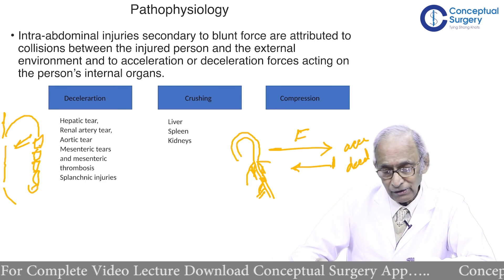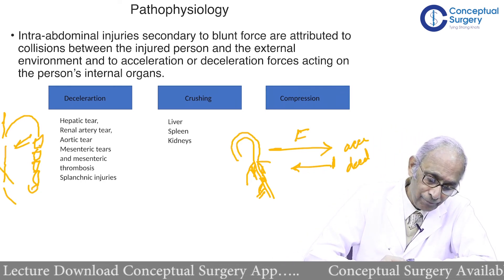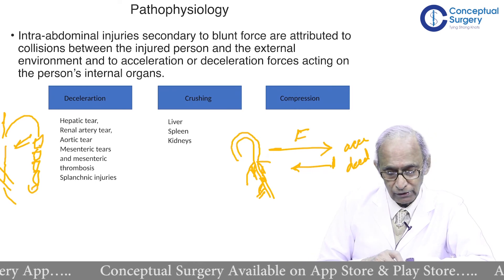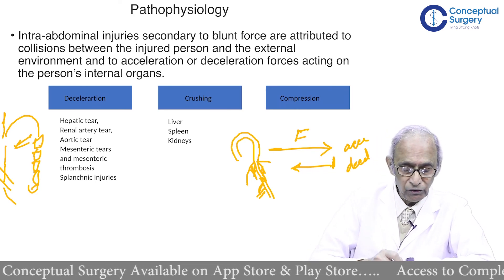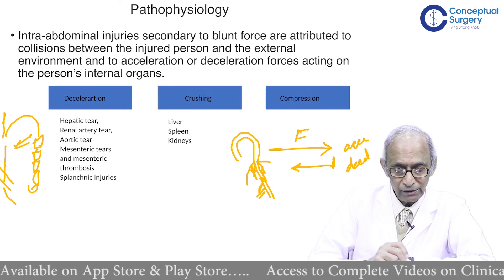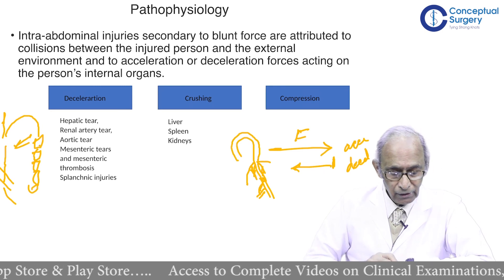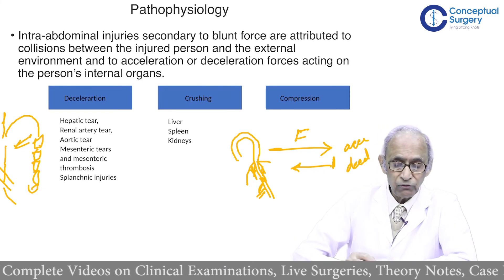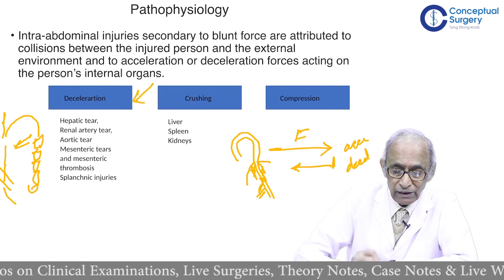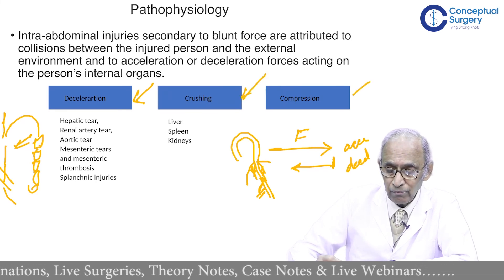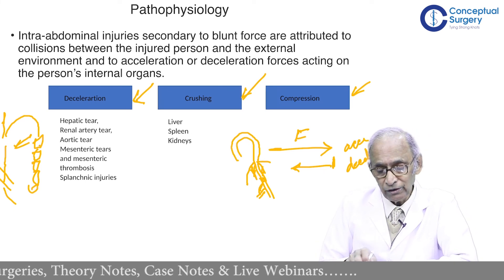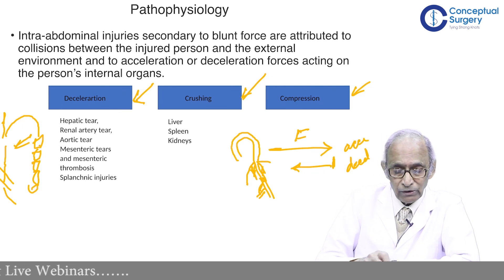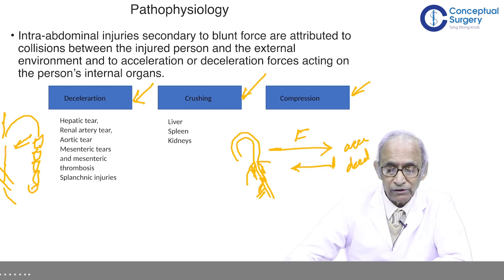Compression is another possibility. If there is a lap belt — think of the belt worn while traveling in a car — the lap part of the belt can compress upon the lower part of the abdomen and cause a lot of injury. So there are three forces operating: deceleration and acceleration force, crushing force, and compression force. The organs can get injured by all of these. In compression, for example, bowel injuries can take place. These are the multiple injuries that can occur to organs — this is the pathophysiology.